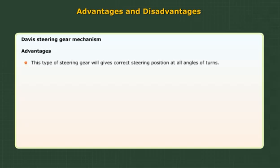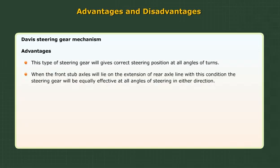Davis steering gear mechanism — advantages. This type of steering gear will give correct steering position at all angles of turns, when the front stub axles lie on the extension of the rear axle line. With this condition, the steering gear will be equally effective at all angles of steering in either direction.